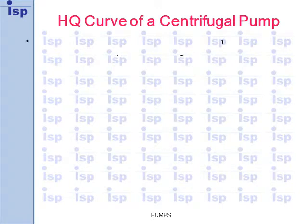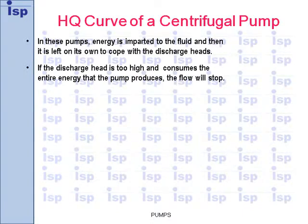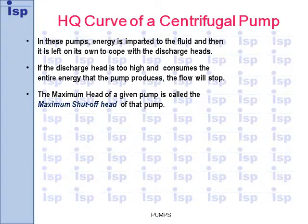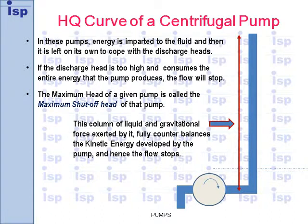HQ curve of a centrifugal pump. In these pumps, energy is imparted to the fluid and then it is left on its own to cope with the discharge heads. If the discharge head is too high and consumes the entire energy that the pump produces, the flow will stop. The maximum head of a given pump is called the maximum shut-off head of that pump. This column of liquid and the gravitational force exerted by it fully counterbalances the kinetic energy developed by the pump, and hence the flow stops.